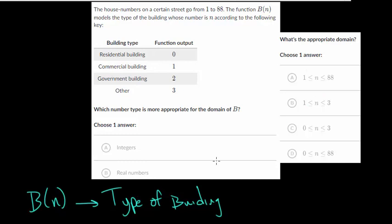And then n is just the number of the house. So house numbers on a certain street go from 1 to 88. And this function models the type of building whose number is n. So n we can say is the house number.